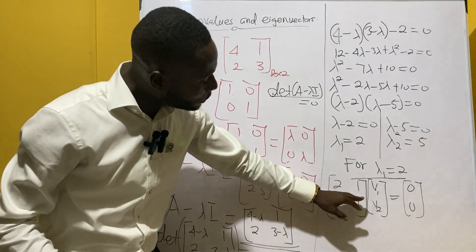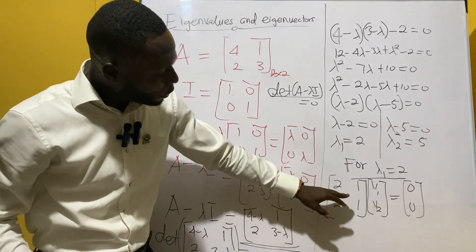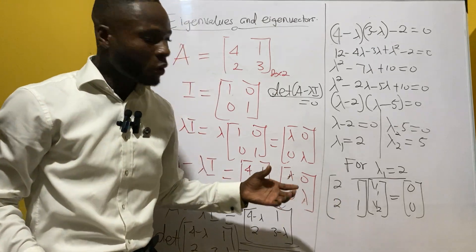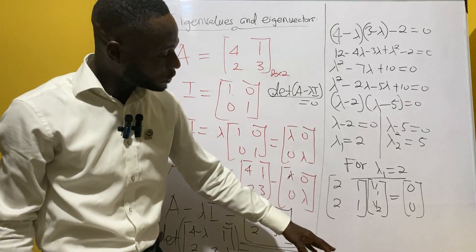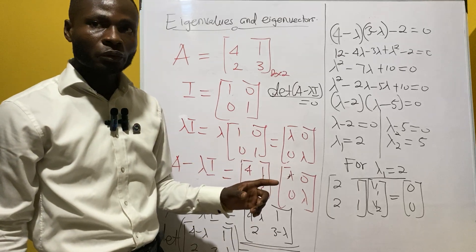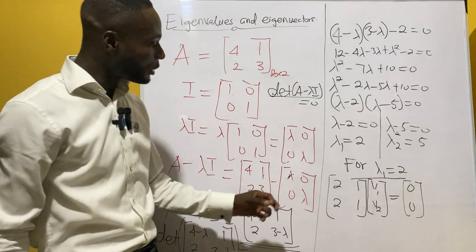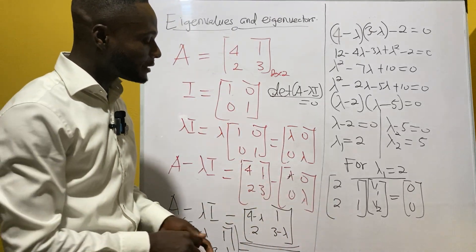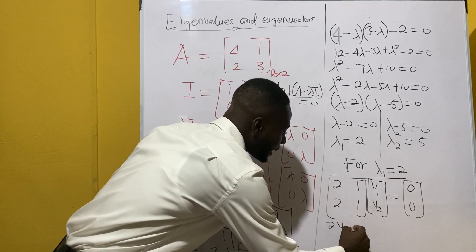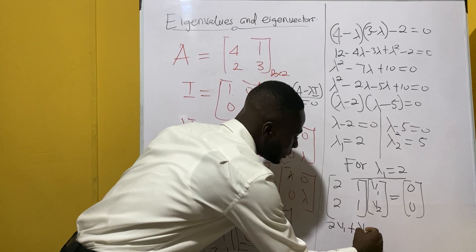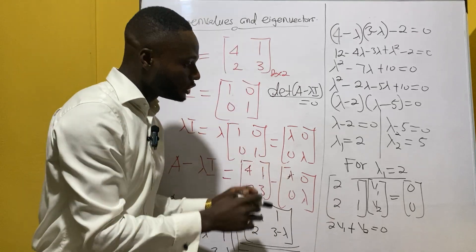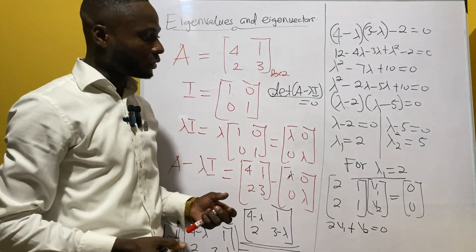We are looking for v1 and v2. We can see clearly that this matrix has the same elements on all rows — this row is the same as this row. So we pick one row to work with. From that row we get the equation 2v1 + v2 = 0.